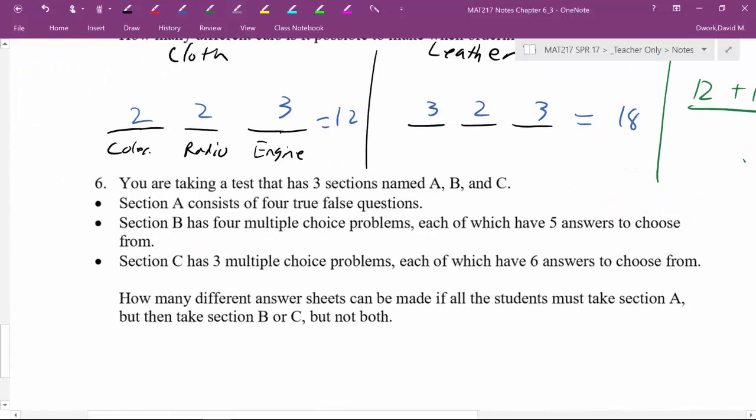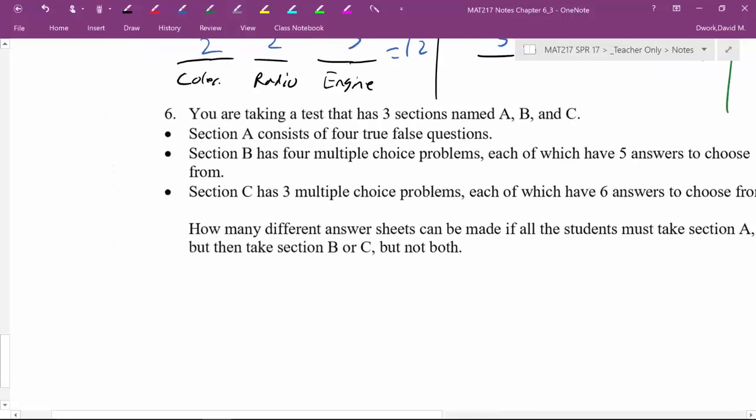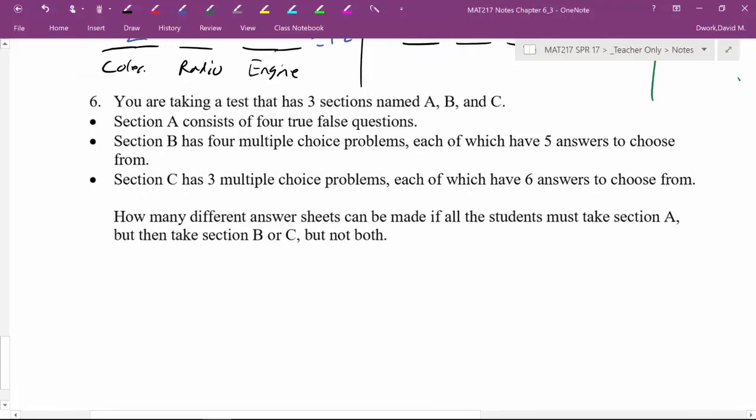Okay, one more, one more quick little example. That was cars. This one is test takers. And there's some tests that are structured in a way such that you don't have to do every problem on the test. You choose categories. So this one is saying you're taking a test that has three sections. The first section is named A, then B, then C. Section A has four true or false questions. So you could think of this, true or false. All right, whatever. We'll get back to that.